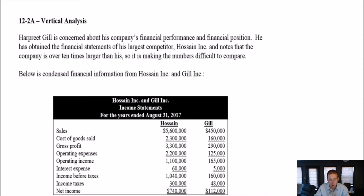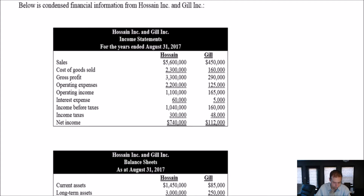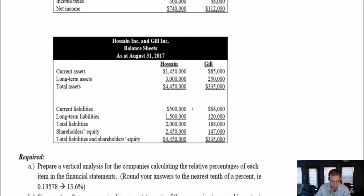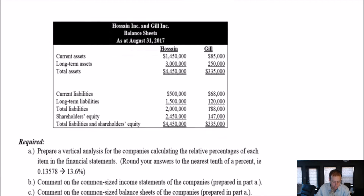So here's the question. Harpreet Gill is concerned about his company's financial performance and financial position. He's obtained financial statements of his largest competitor, Hossein Inc., and notes that the company is over 10 times larger than his, making the numbers difficult to compare. Sure enough, if we look at these statements, Hossein Inc. is just way bigger than Gill Inc. Looking at the balance sheet as well, it's near impossible to really compare.